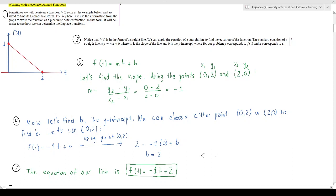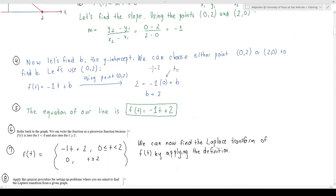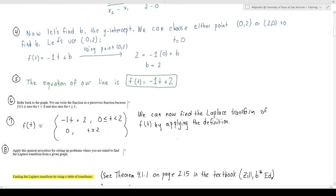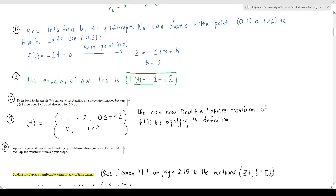So f(t) is equal to -1t plus b, and using point (2,0) we find that b is going to be equal to 2, because we just plug in f(t) equals 0 and t equals 2. So the equation of the line is -1t plus 2.